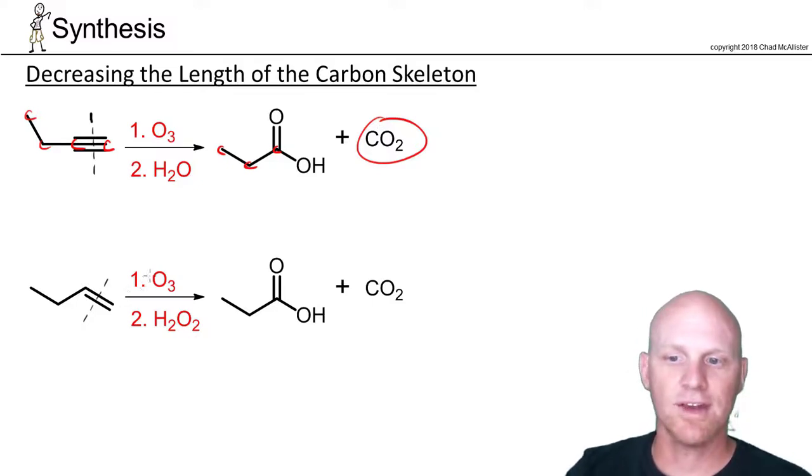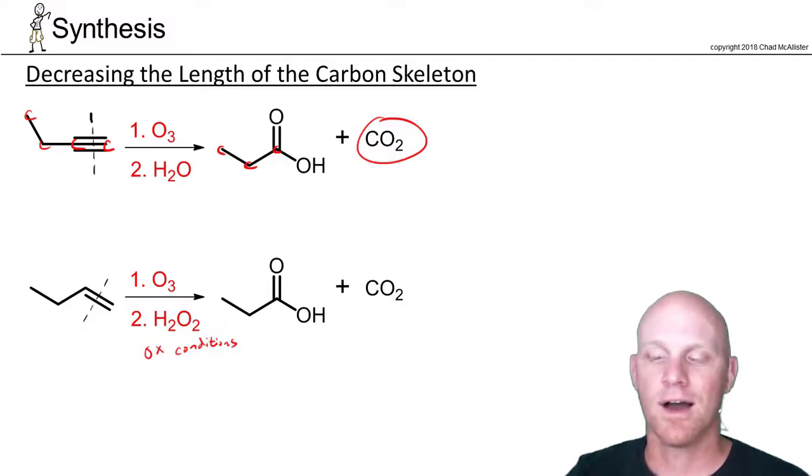If you start with an alkene, ozone will generally be followed up with either peroxide, which is oxidizing conditions, and you'll get a carboxylic acid. Or you could do it under reducing conditions with either dimethyl sulfide or zinc and water and get an aldehyde instead.